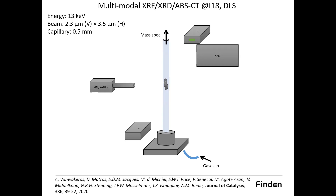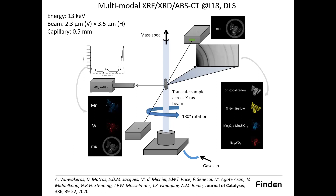Apart from these high-energy experiments — using almost 100 keV — it is also possible to go to lower energies. At beamline I18 of Diamond Light Source we performed multimodal experiments using single-particle studies, simultaneously collecting diffracted, absorbed, transmitted, and fluorescent signals. This provides different types of information simultaneously, including mapping different chemical species as well as the elemental distribution.